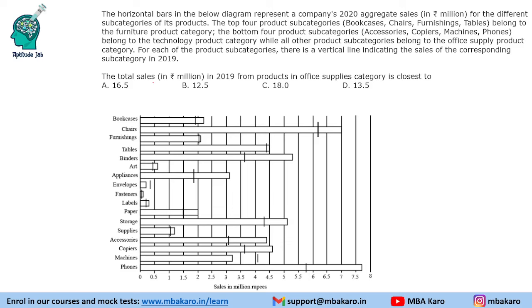The horizontal bars in the diagram represent a company's 2020 aggregate sales for different subcategories of its products. The top 4 product subcategories — bookcases, chairs, furnishing, and tables — belong to the furniture product category. The bottom 4 subcategories — accessories, copiers, machines, and phones — belong to the tech product category.